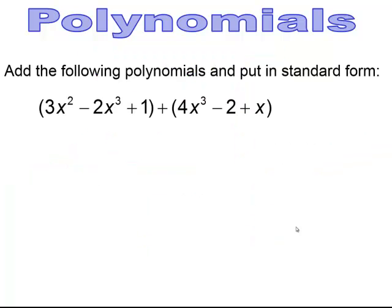Pause and try. When you do the addition here, you should have gotten 2x³ + 3x² + x − 1, written in standard form.